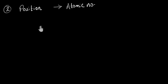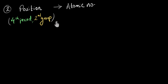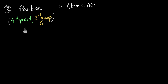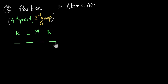Now let's do the opposite problem. If we are given the position of an element — its period number and group number — how do we find out its atomic number? The tools to solve this are already in what we've covered, so pause the video and try it yourself. This element belongs to the fourth period, which means electrons are present in four shells: K, L, M, and N. We need to find how many electrons are in each shell to count the total and get the atomic number.